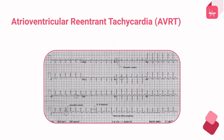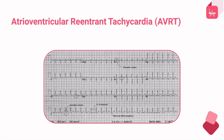In the given ECG, the patient's heart rate is nearly 300 beats per minute. The rhythm is regular and the QRS complex is narrow at approximately 0.04 seconds. The P wave is followed by the QRS complex; retrograde P waves are present in the ST segment, visible as pseudo-R or pseudo-S waves. A delta wave is present. These findings indicate that the patient has orthodromic AVRT.